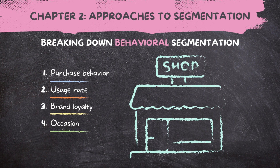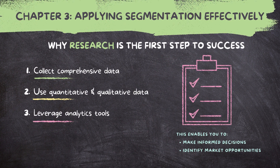Heading into chapter three — how do you apply segmentation effectively? Market segmentation is a dynamic process that demands careful planning, execution, and continuous refinement to be truly effective. Number one is research. Effective segmentation begins with thorough research, which involves collecting relevant data about your target market through surveys, interviews, and data analysis. Research is the foundation from which you build your segmentation strategy. Best practices include collecting comprehensive data covering demographics, psychographics, and behavioral factors to give a holistic view of your audience.